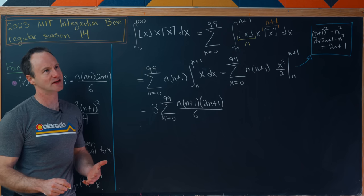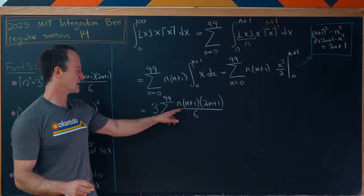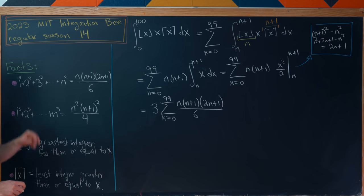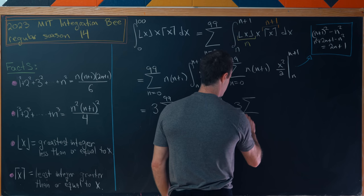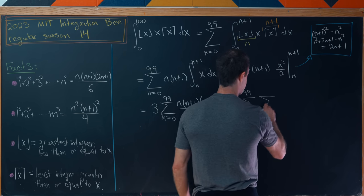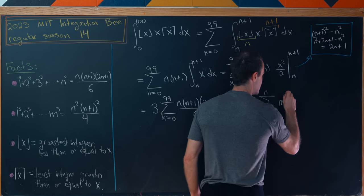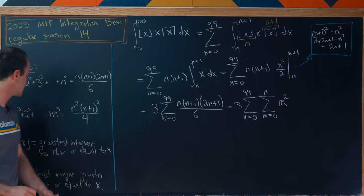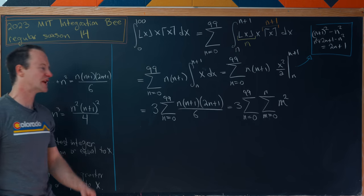Now here's where we're doing things maybe not as efficiently as we could just for illustrative purposes. Now let's take this thing inside the sum and rewrite it as a sum itself. So here we'll have 3 and then the sum n goes from 0 to 99 and then the sum as m goes from 0 to n of m squared because the sum of the first m squares is exactly this if we throw on a 0 squared. And now we're going to change the order of summation.